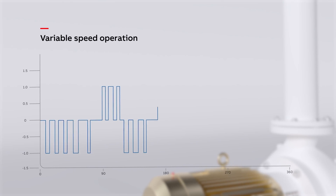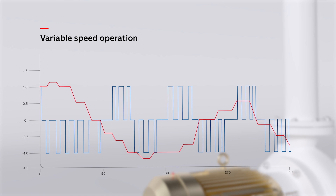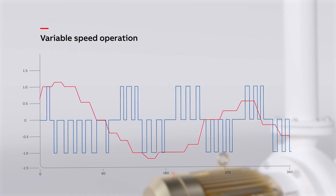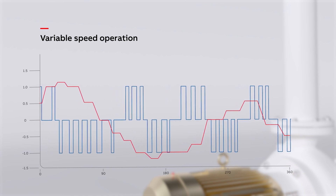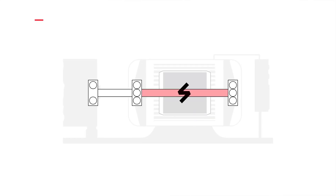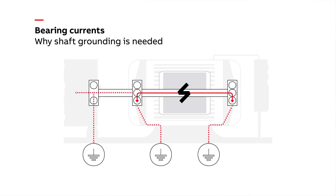When motors are controlled by a VFD, the power is converted to a series of pulses that emulate the sine wave, but is not exact. The result is an imbalance known as common mode voltage. The common mode voltage builds up across the bearings due to the dielectric effect of the bearing grease and will eventually discharge through the bearings to ground. Unfortunately, common mode voltage cannot be eliminated, but it can be reduced.